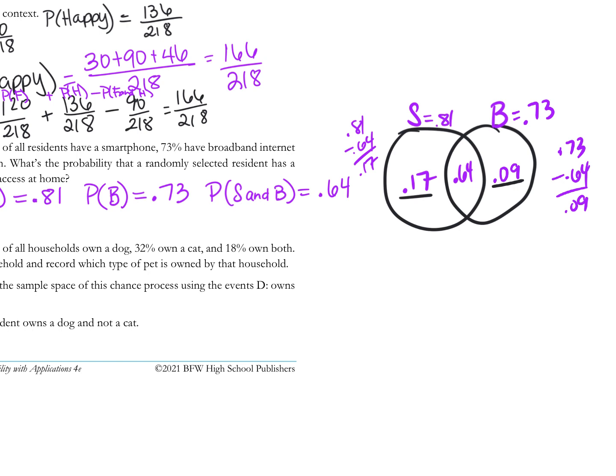Now, can I find the probability of having a smartphone or broadband? What do I add up? 0.17 plus 0.64 plus 0.09. I got 90.